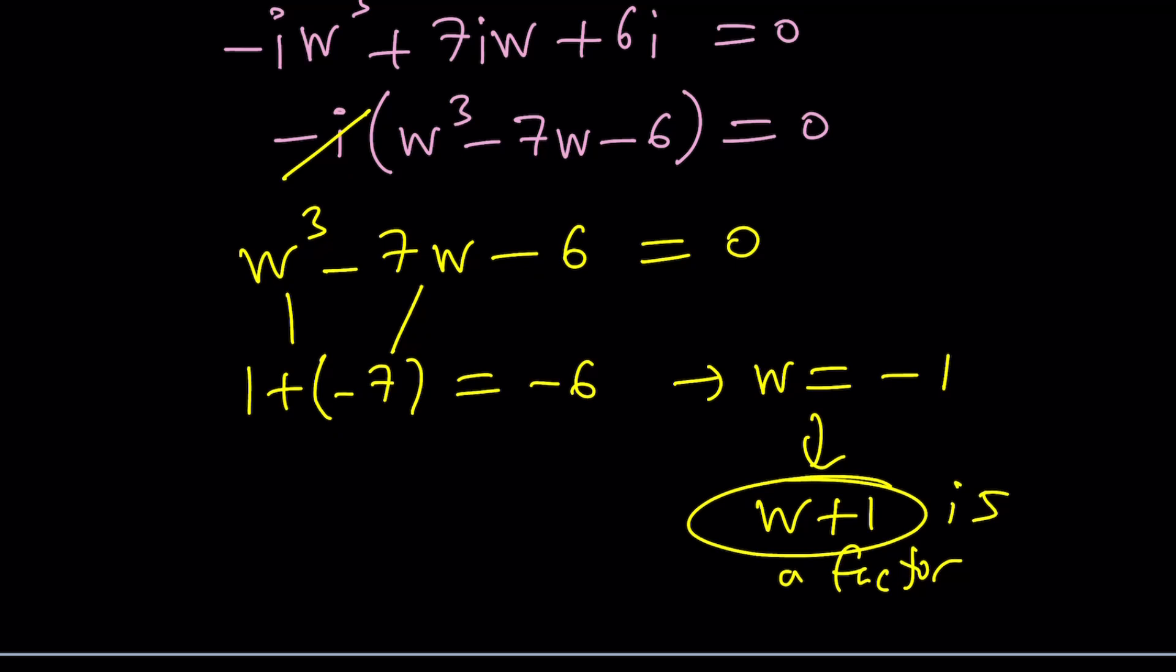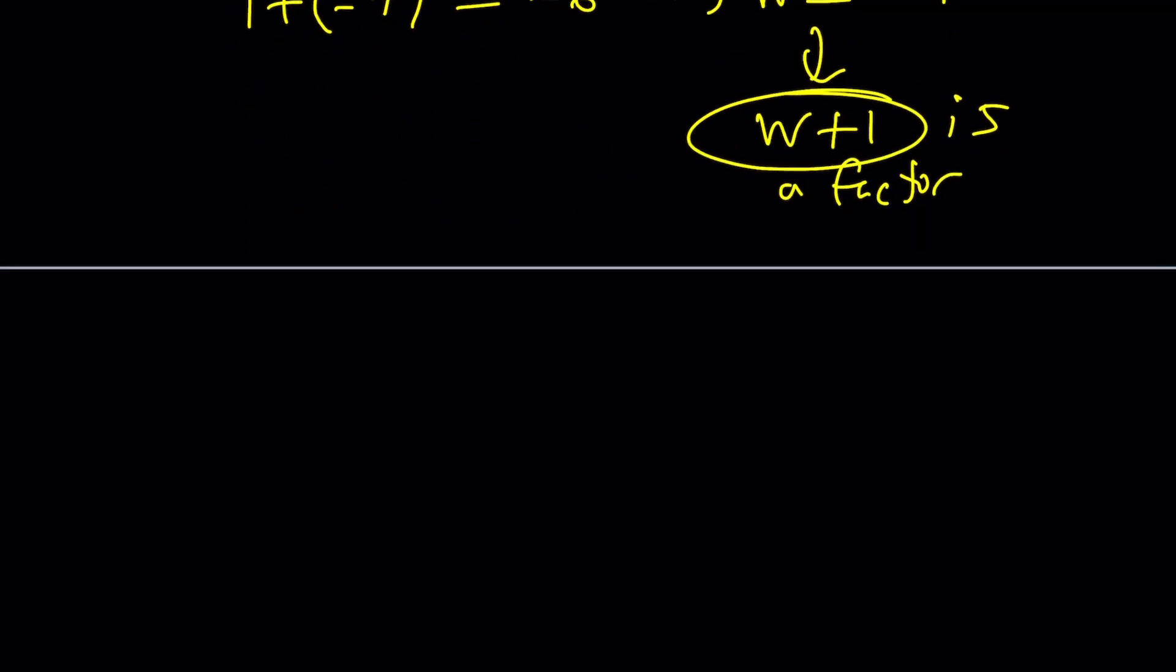Let's go ahead and do it. W plus 1 divided into W cubed minus 7W minus 6. If W plus 1 is actually a factor, then the remainder should be 0, right? Let's find out. With long division, you could also do the factoring method, kind of split up, which I almost always use, but I'm kind of leaning towards long division these days. As long as it's not taking too long.